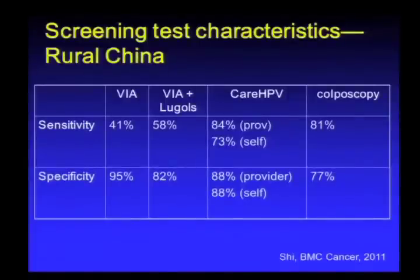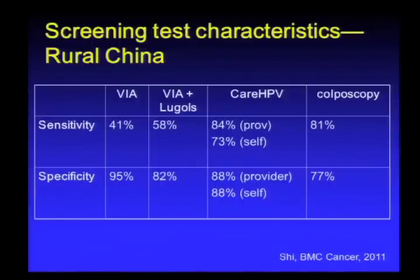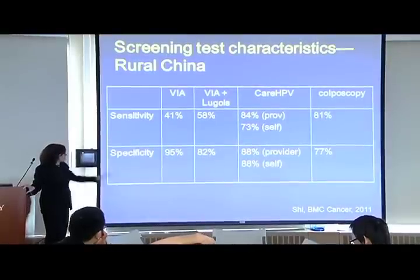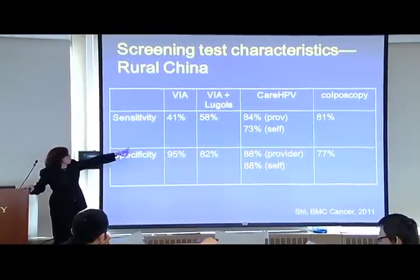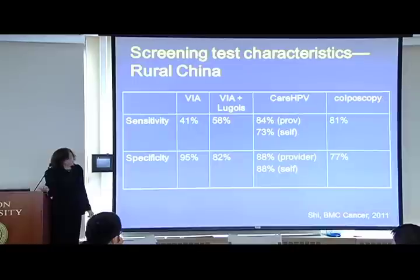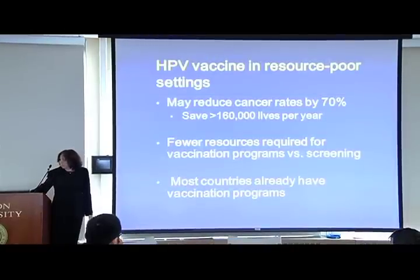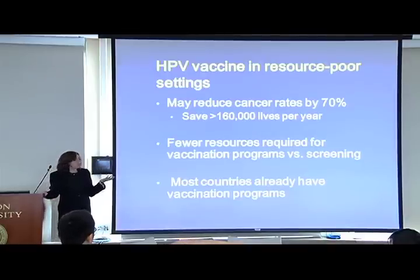Results from rural China compared visual inspection with acetic acid, VIA plus Lugol's iodine, CareHPV, and colposcopy on everyone, looking at detection of high-grade dysplasia. Sensitivity for VIA and VIA with Lugol's was not very good, though specificity was pretty good. CareHPV however was quite good. Colposcopy was only about 80% on both sensitivity and specificity. Provider-collected and self-collected specimens performed almost identically, suggesting self-collection provides a good screening option.